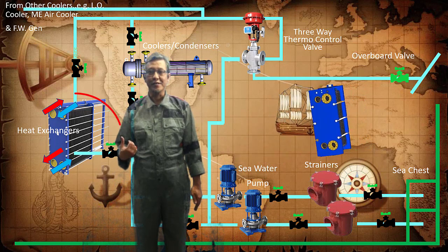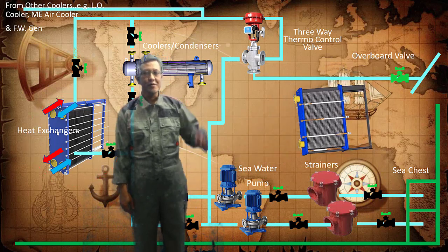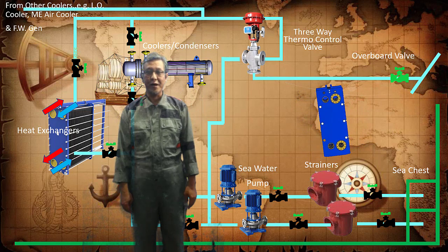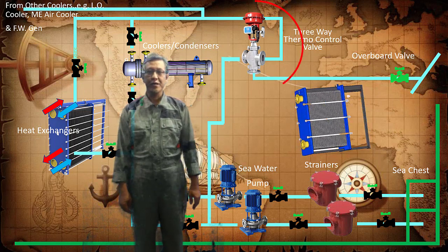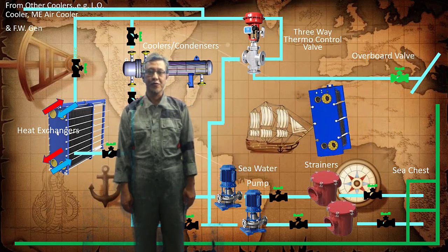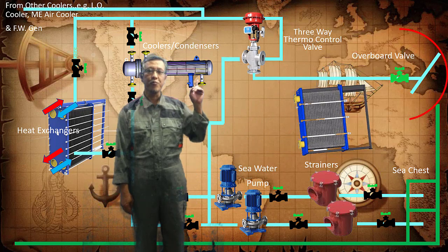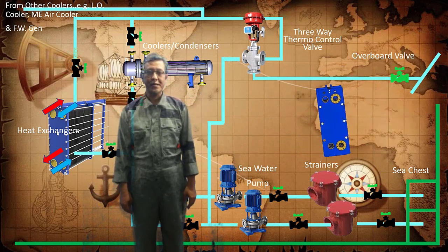To the right is the heat exchangers. On top, not necessarily as the diagram is laid out, is the three-way thermostatic control valve, and of course the outdoor valve.